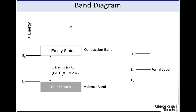In the last lecture we introduced the concept of the band diagram — the conduction band and the valence band. The conduction band has a lot of empty states, and the valence band has mostly filled states with electrons. We describe the conduction band by EC, which is the bottom of the conduction band, and EV, which is the top of the valence band. We also note the Fermi level, which we denote by EF.